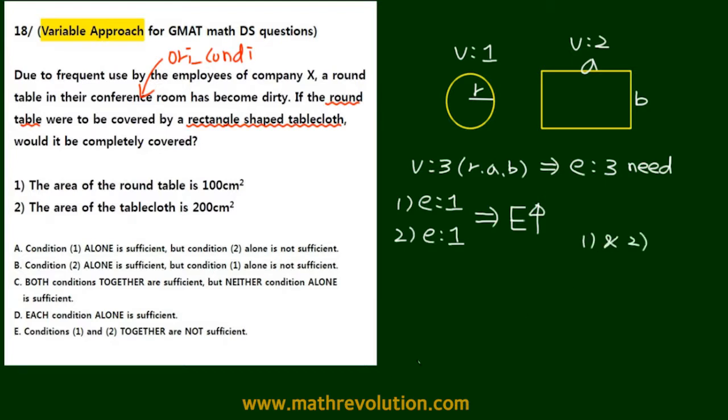Let's see why by looking at condition one and two together. So first of all, the round table looks like this, and the tablecloth looks like this.